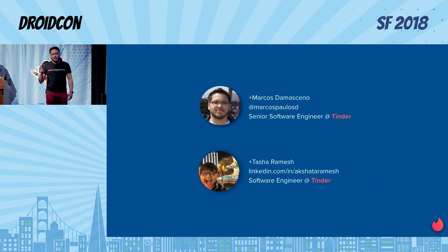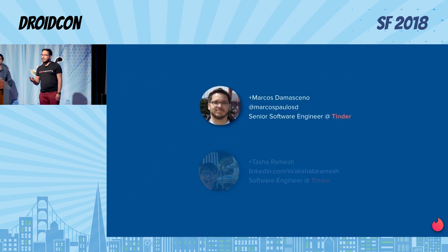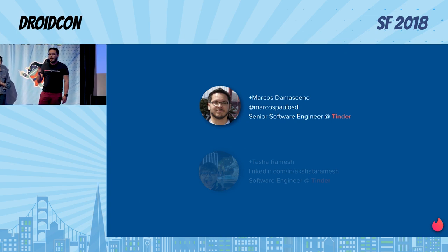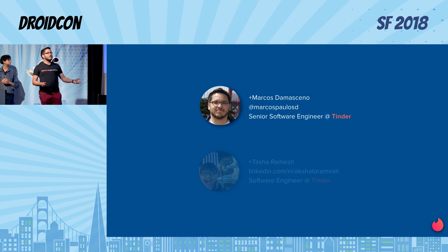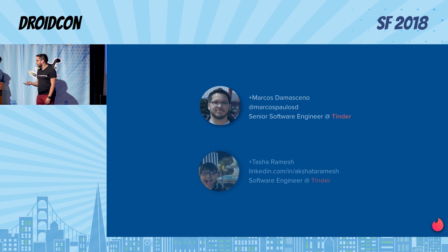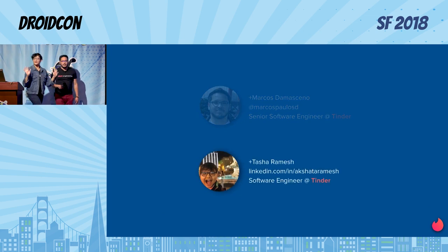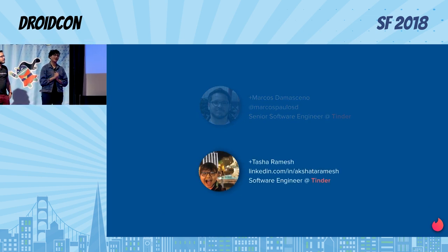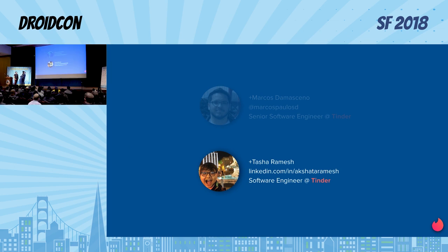Before we start, I want to do a quick introduction about myself. My name is Marcus, I work as a software engineer for Android at Tinder. I'm also a Google Developer Expert and I have almost eight years of Android software development. I'm Tasha and thanks for being here. I've been at Tinder for two years now and I've been developing Android for about over five years now.